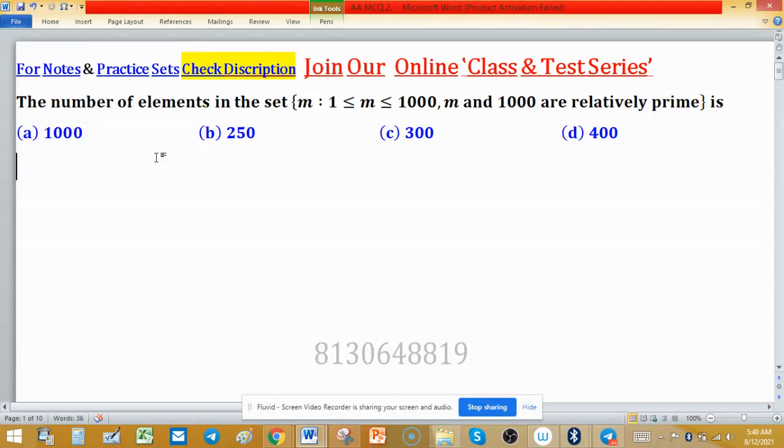This set can be written in another format of notation. I can write U(1000), and what is U(1000)? It can be written as: in this set, all those m will come...